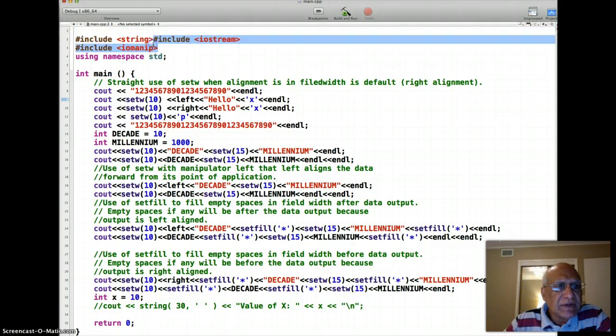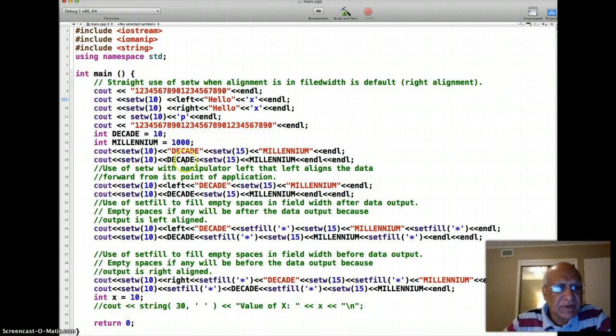Here's my program. I've used the iomanip and iostream. The string really was not needed. I had that because I was doing something with the string here which I'm not going to talk about in this example.